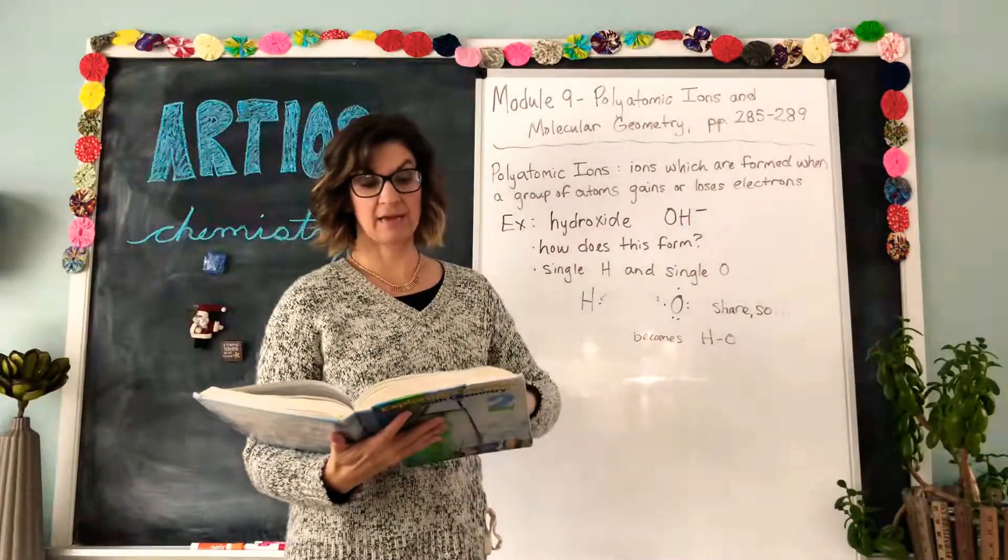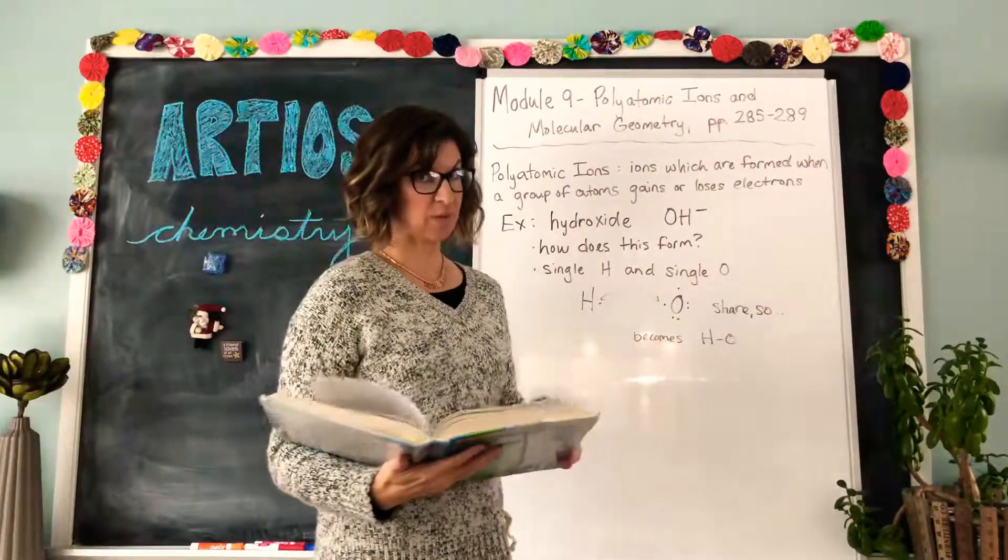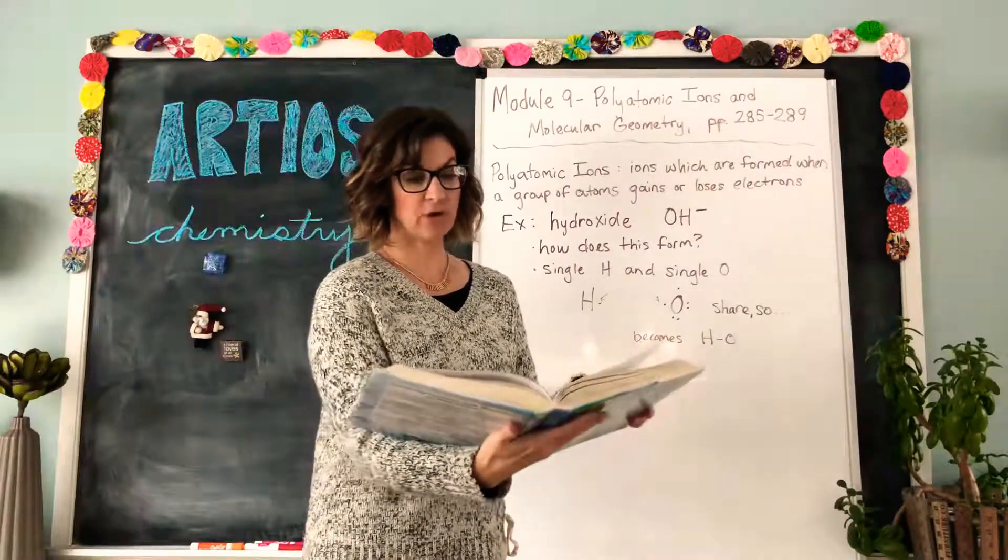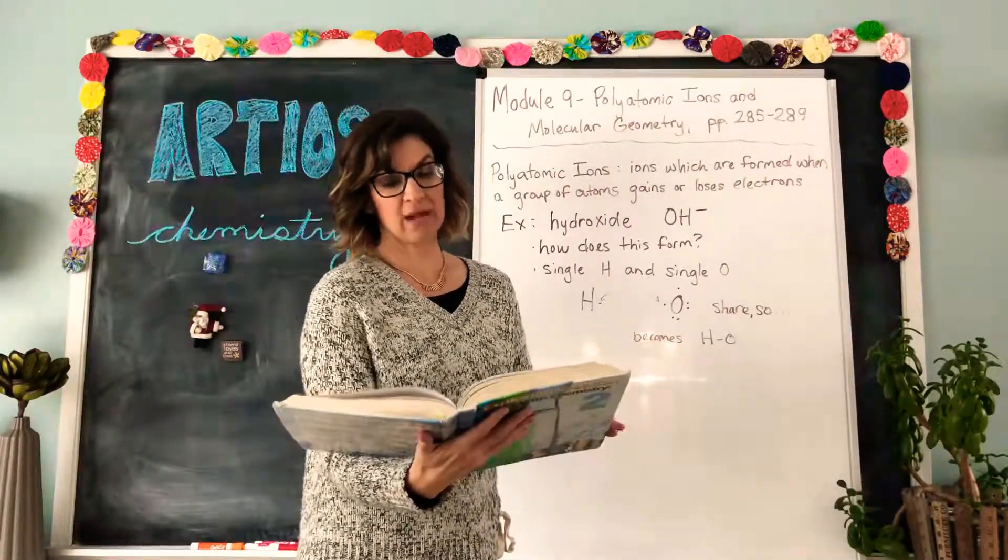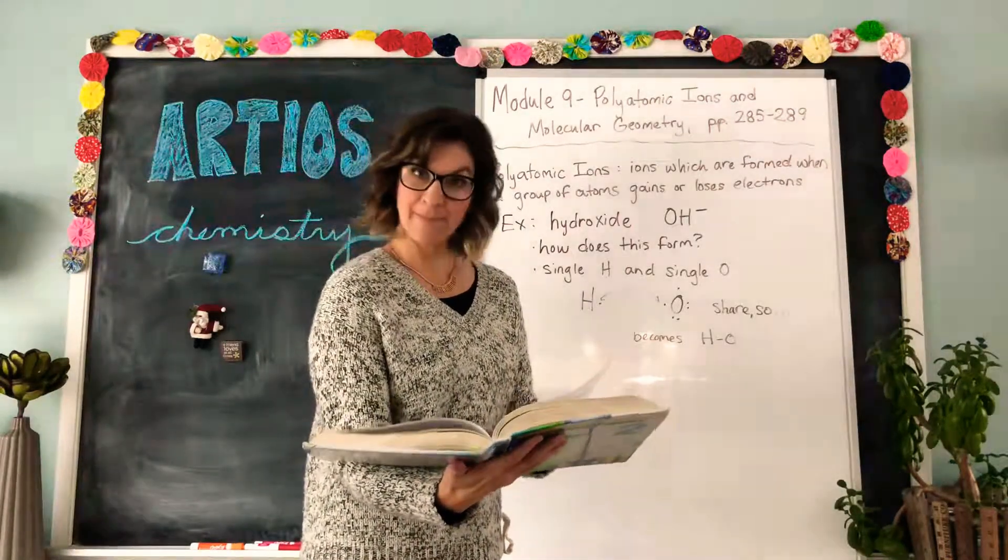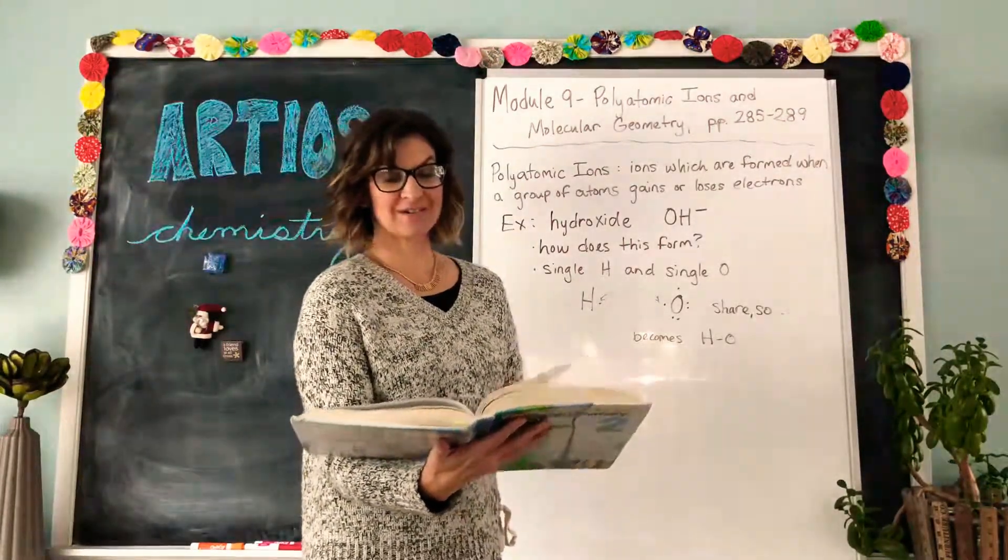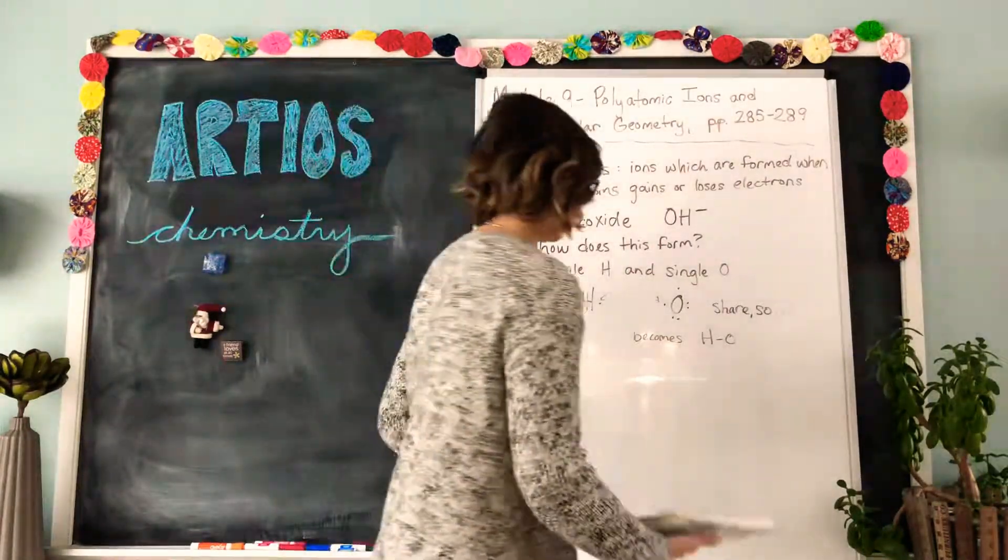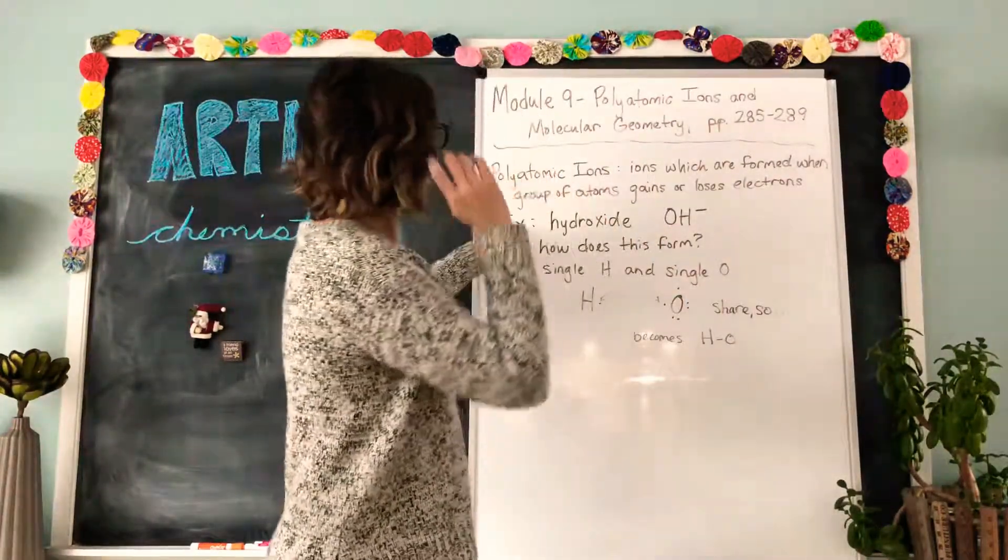There's a list of common polyatomic ions in your textbook. That is on page 288, so you might want to make a note of that. Page 288 is table 9.1. Those are important polyatomic ions that you will eventually memorize, so start to get familiar with those.